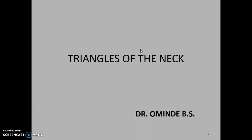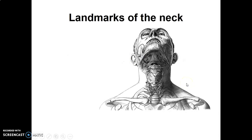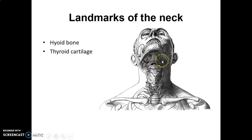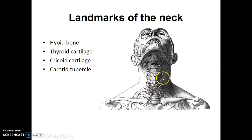You need to know what landmarks are there on the neck. This is the skeletal structure of the neck. You need to be able to identify the hyoid bone, then the thyroid cartilage, the cricoid cartilage, and the carotid tubercle, which is usually the transverse processes of the sixth cervical vertebra. Those are the osteocartilaginous landmarks of the neck.